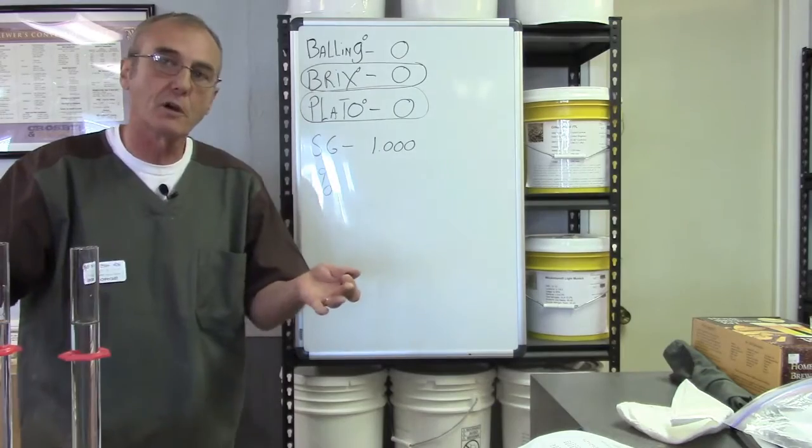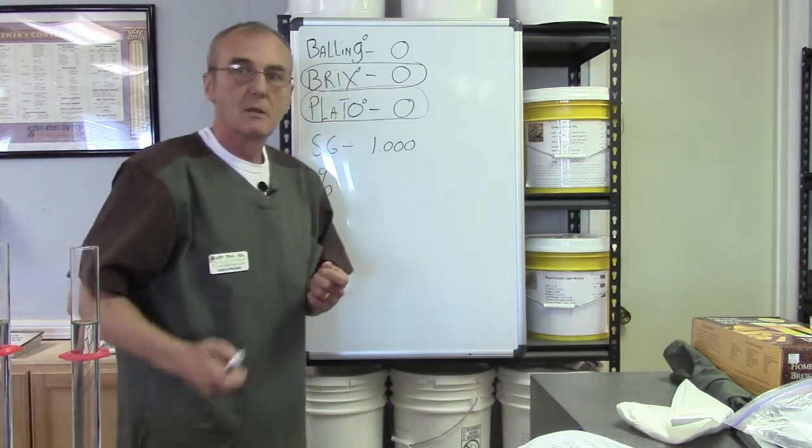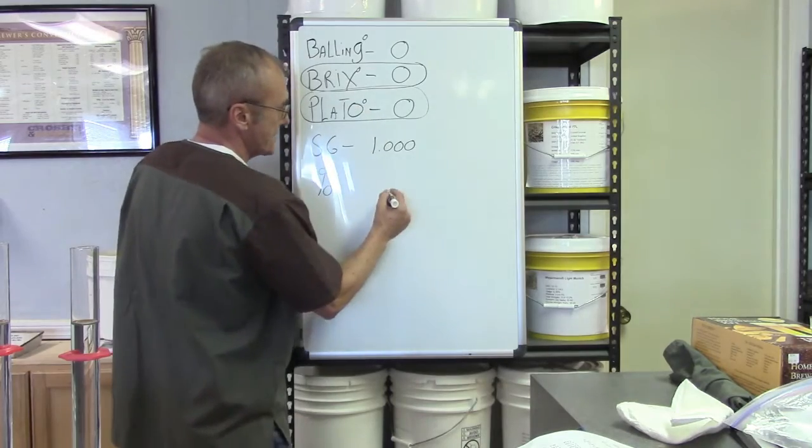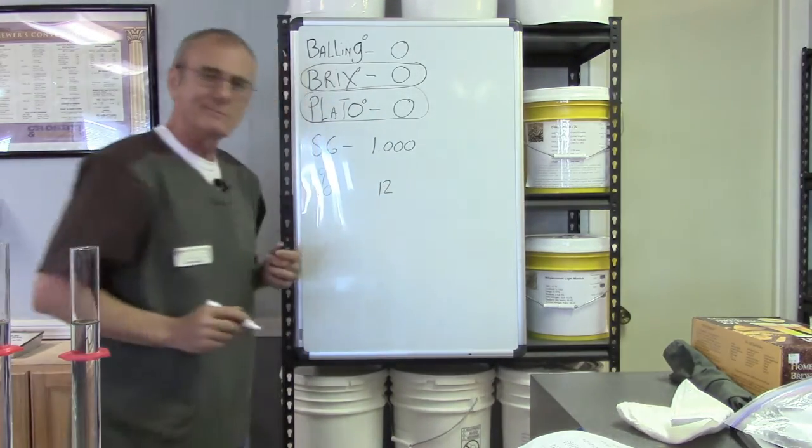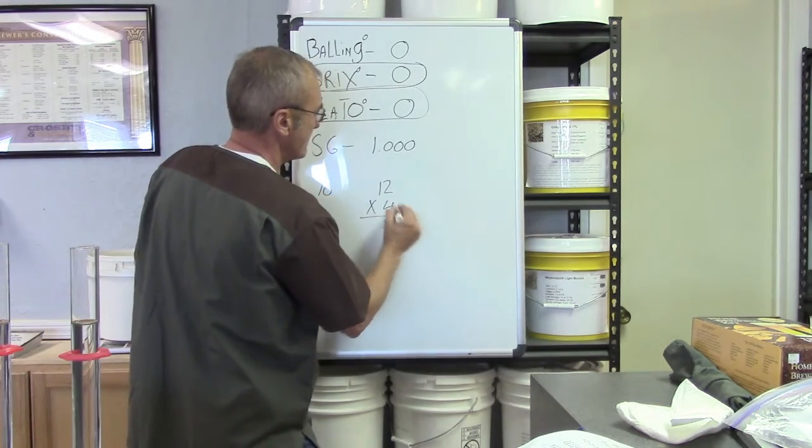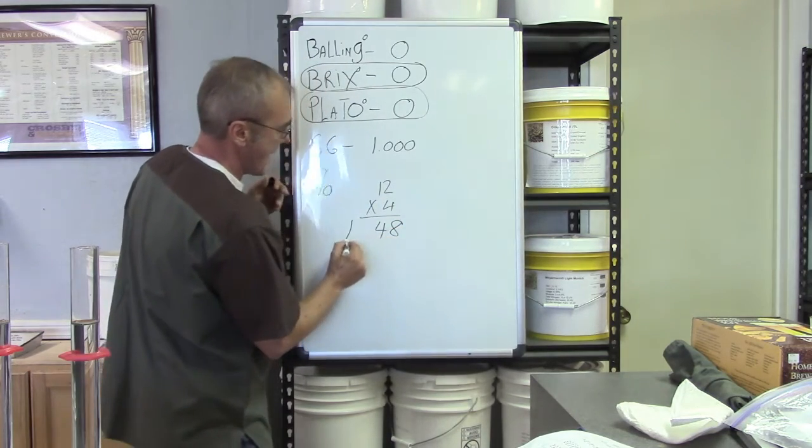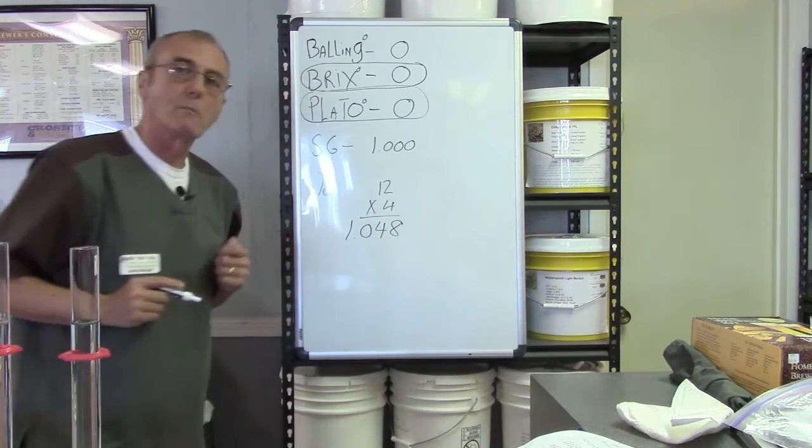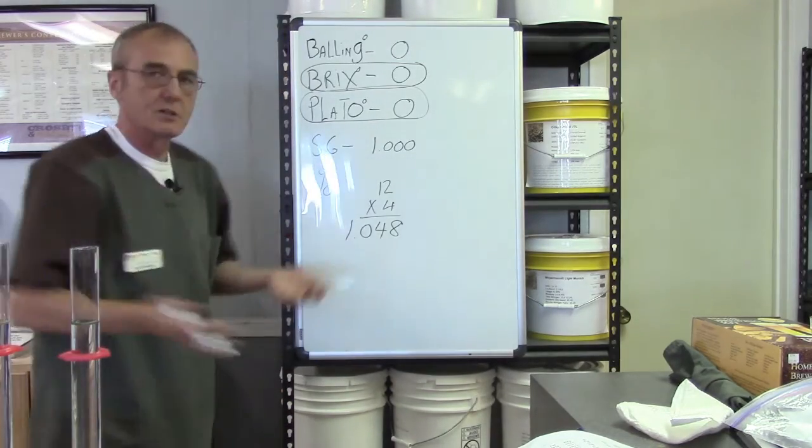So I wanted to share that with you just to make sure that you understood that. Now, if you ever get stuck in a position where you've got a plate, let's say you got a bricks reading, and they say, oh, well, my bricks reading is 12 degrees. Well, if you take 12 degrees and you multiply that by four, that is actually a specific gravity of 1.048.